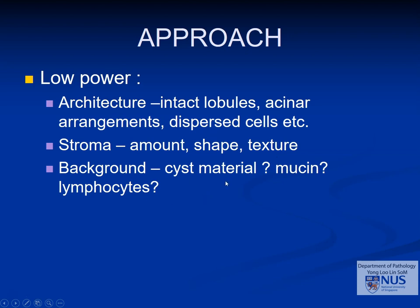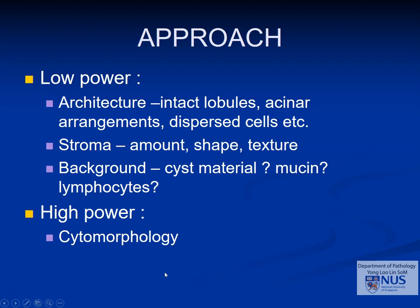Don't forget the background material. Cyst material indicates a cystic lesion, recognized by macrophages and sometimes granular proteinaceous material. Mucin is also very important and will be discussed in the next video. Lymphocytes can be seen in some tumors such as Warthin tumor. At high power, we focus on cytomorphology — nuclear and cytoplasmic features — and background cells. In pleomorphic adenoma, there are often dispersed single cells with intact cytoplasm, as opposed to basaloid tumors like adenoid cystic carcinoma, where you more likely encounter naked nuclei.